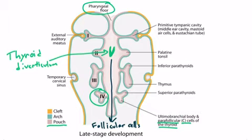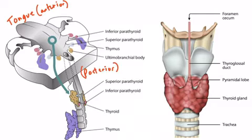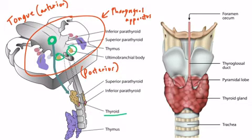Let's clarify the migration of the thyroid diverticulum. To orient you: the tip of the tongue is anterior, with posterior behind it, and the pharyngeal apparatus is visible here. The circle here is the thyroid diverticulum, which travels down and ultimately forms the thyroid. The fourth pouch is where the parafollicular cells come from. The image on the right shows an anterior perspective of the lower neck, where the thyroid diverticulum traveled down from the tongue to form the thyroid.